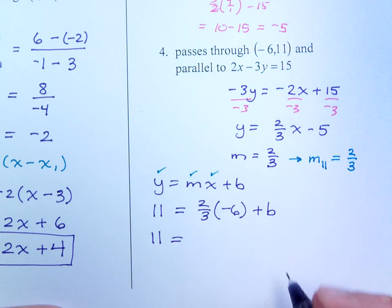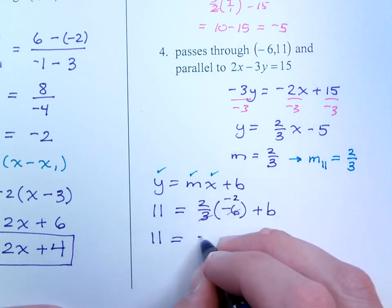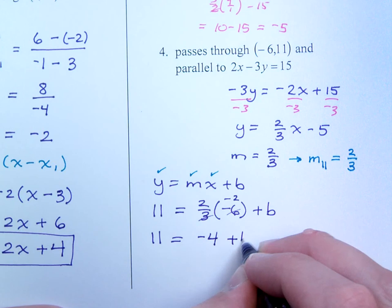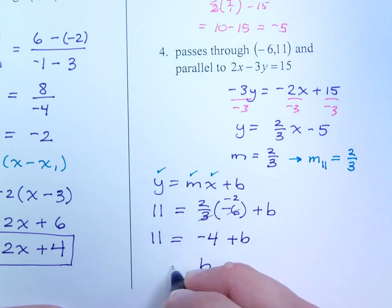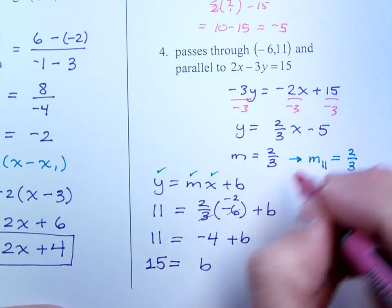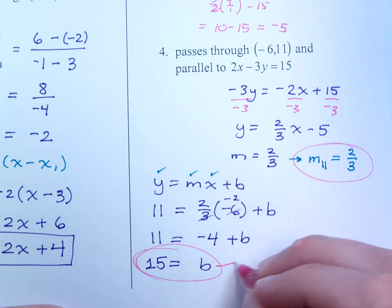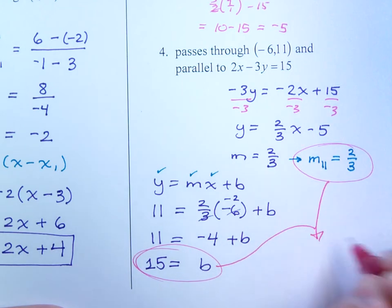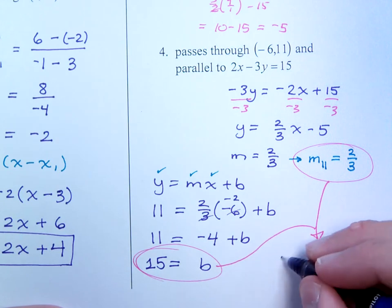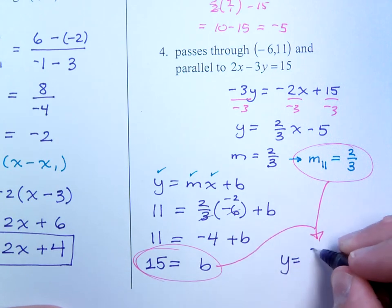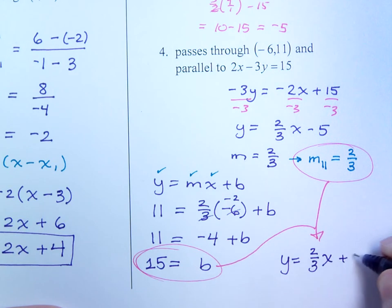11 equals, reduce this to get negative 2, so that's negative 4. And then when you move the 4 to the other side, you find that b equals 15. So, you take your b, you take your slope, and you join them together to get your equation in slope-intercept form, y equals 2 thirds x, plus 15.